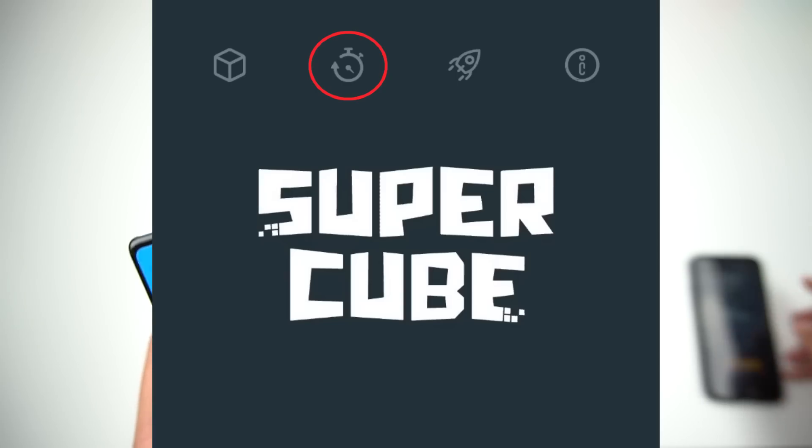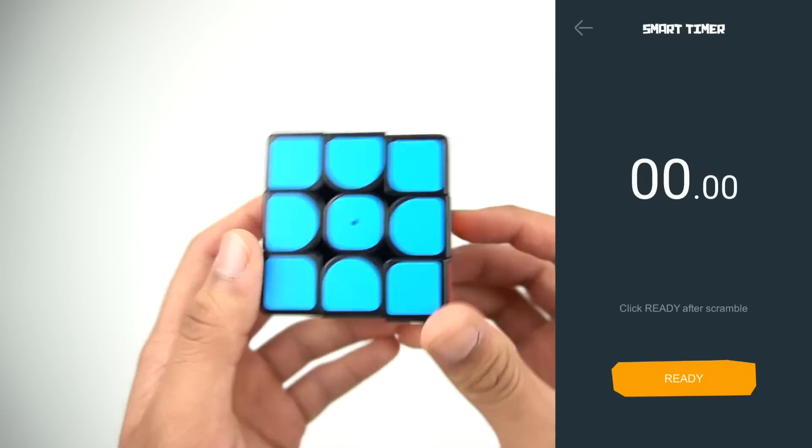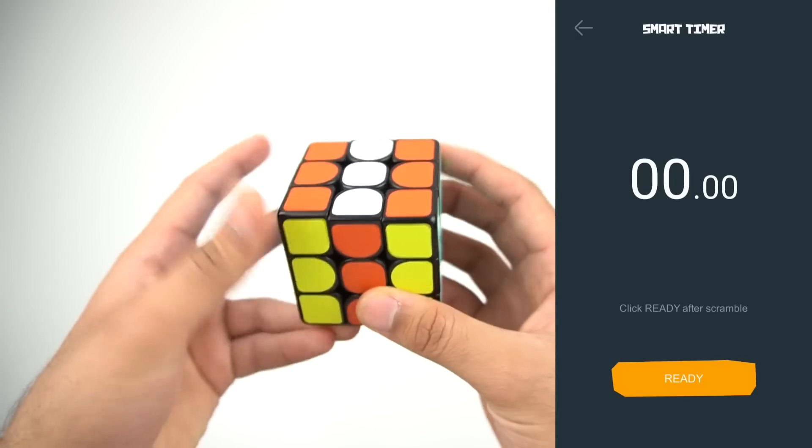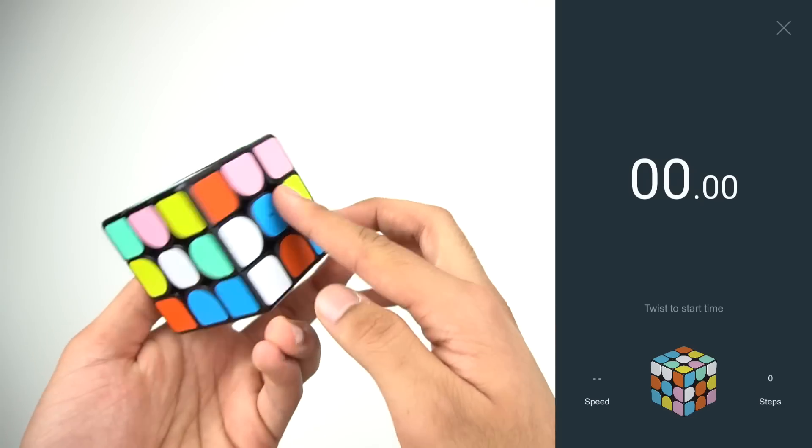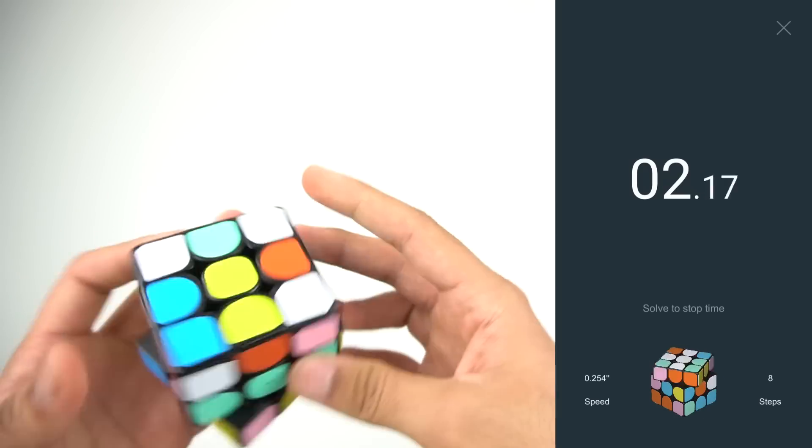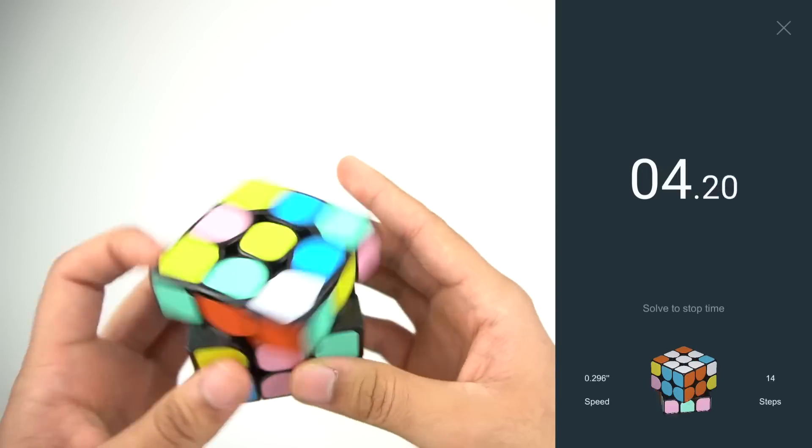Next up is the smart timer, and it's probably the most useful thing in the app for cubers. Once you scramble your cube with at least 6 moves, click ready and the timer will start as soon as you make your first move, and it'll stop when the cube is solved.